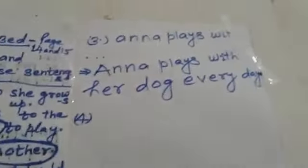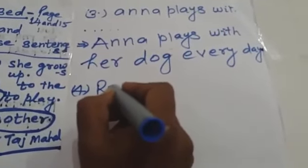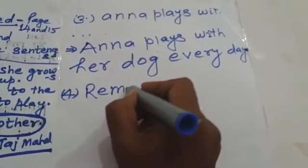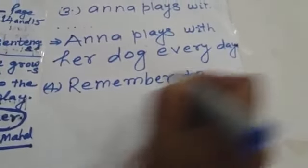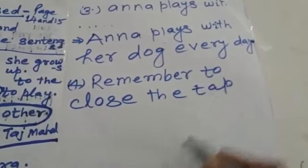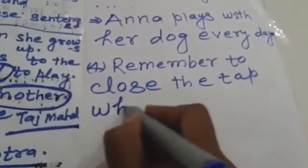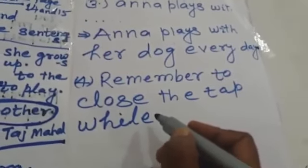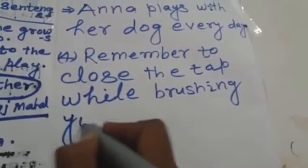Question number 4: 'Remember to close the tap while brushing your teeth.' The word 'Remember' starts with a capital R since it begins the sentence — R, E, M, E, M, B, E, R. Then 'to close' — C, L, O, S, E — 'the tap'. We take 'while brushing your teeth' from the word box to complete the sentence, and place a full stop at the end.